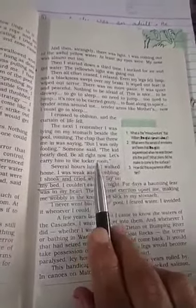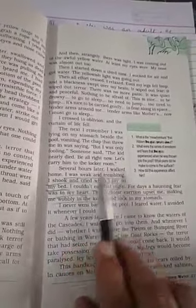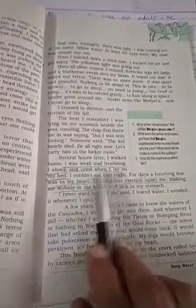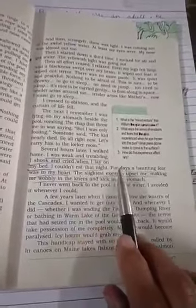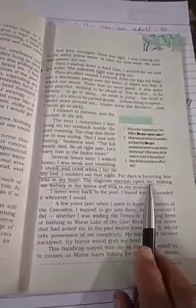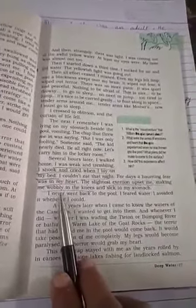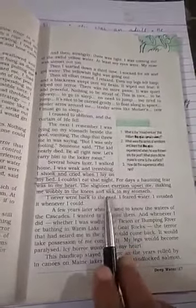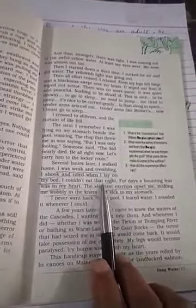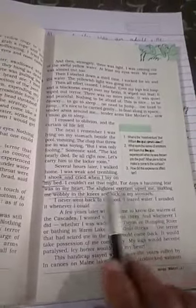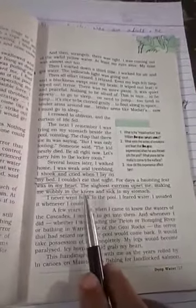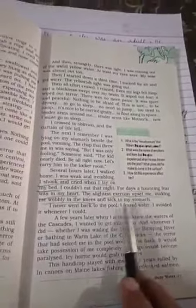Several hours later I walked home. I was weak and trembling. I shook and cried when I lay on my bed. I could not eat that night. For days a haunting fear was in my heart. The slightest exertion upset me, making me wobbly, making me shaky in the knees and sick to my stomach. The immediate impact of the misadventure was that Douglas could not eat anything that night. There was a haunting fear in his heart. The slightest exertion would upset him, making him shaky in the knees. He was sick to the stomach.